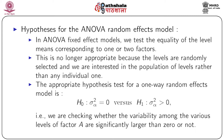Now let us look at the hypotheses for the two-way analysis of variance random effects model. Just like in one-way analysis of variance, we have well-defined null and alternative hypotheses. In the fixed effects model we test equality of level means, but this is no longer appropriate because the levels are randomly selected and we are interested in the population of levels rather than any individual level. The appropriate hypothesis test for the random effects model uses the null hypothesis sigma_alpha squared equals 0 versus sigma_alpha squared greater than 0, checking whether the variability among the levels of factor A is significantly larger than 0.